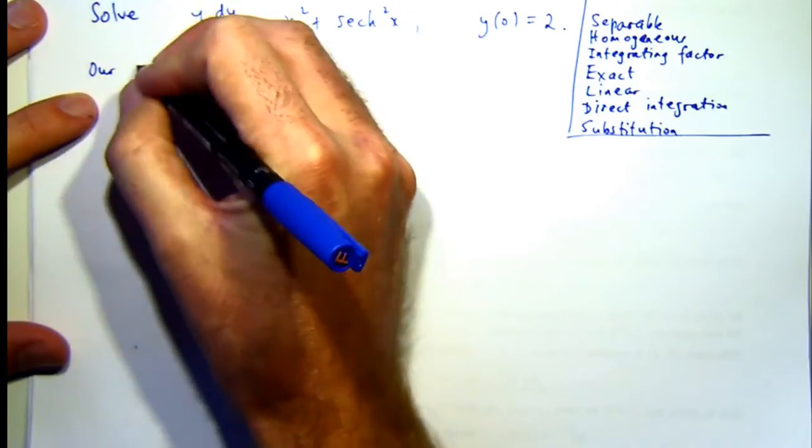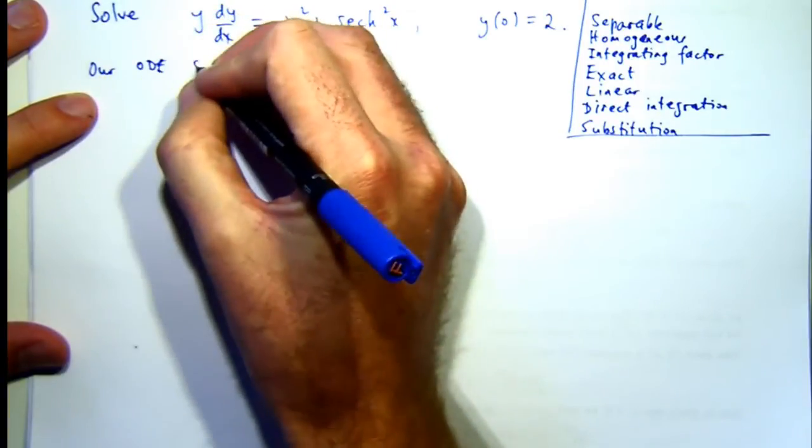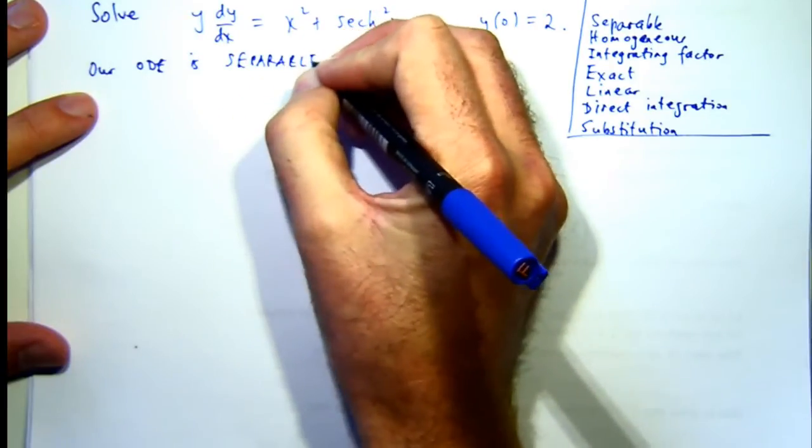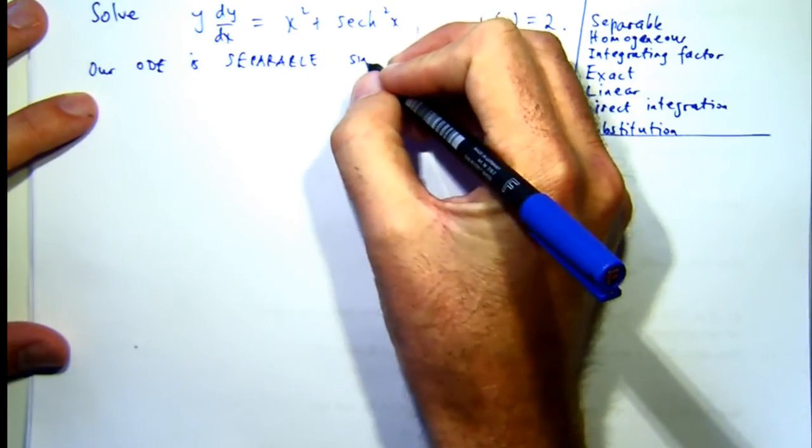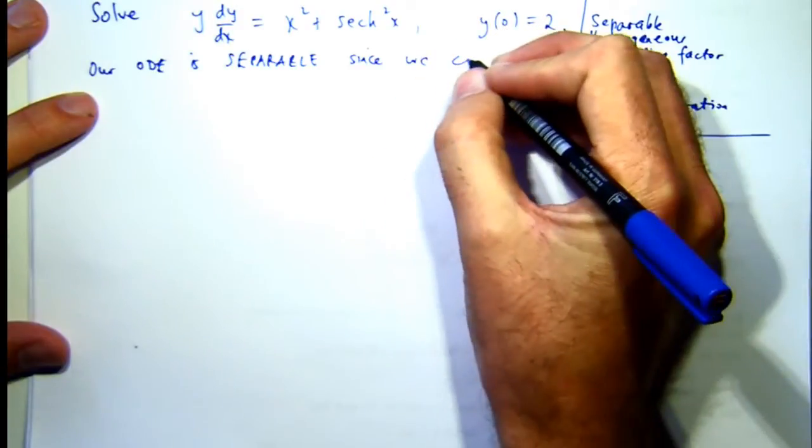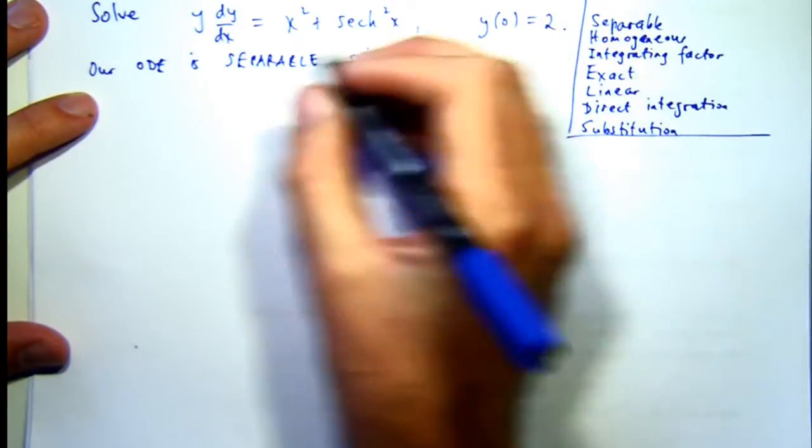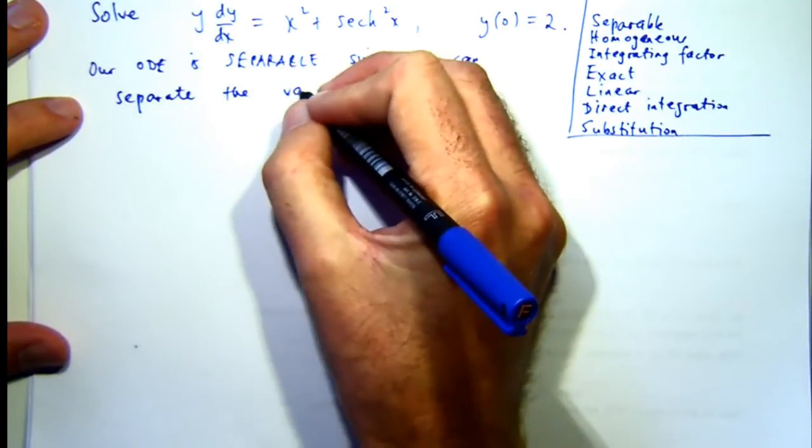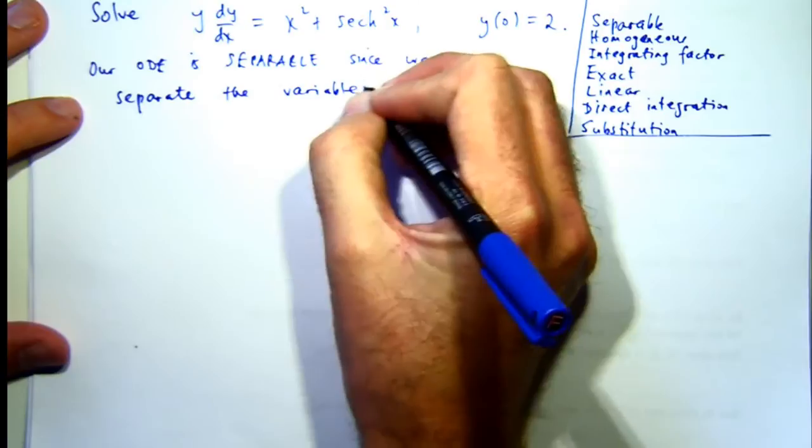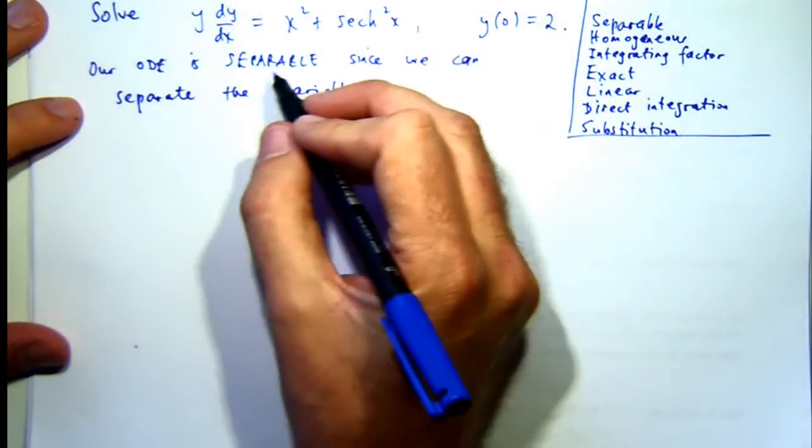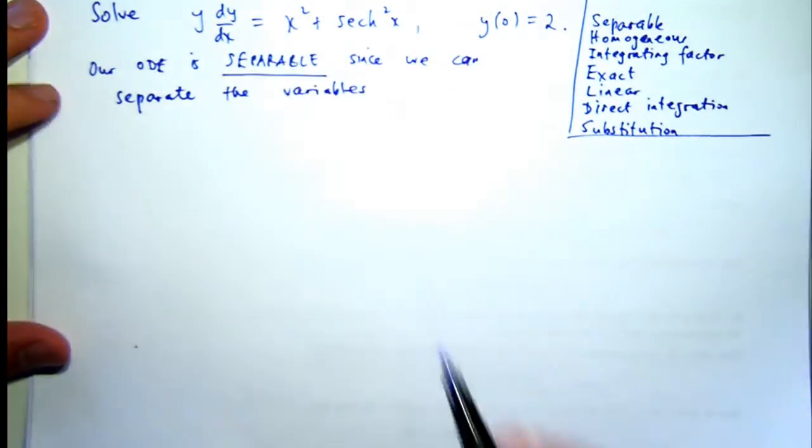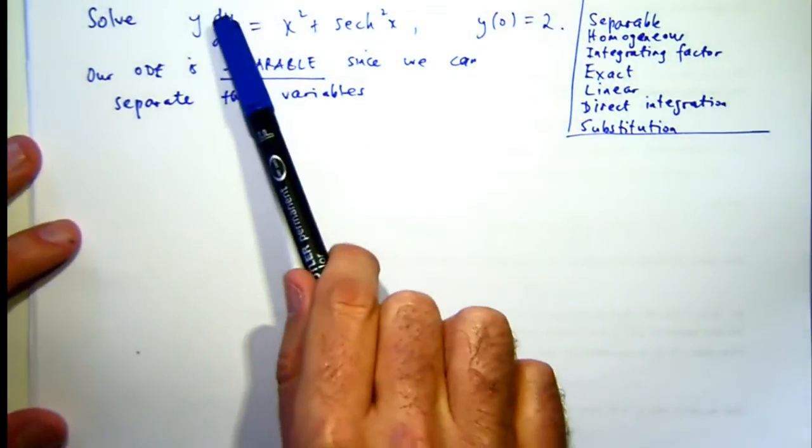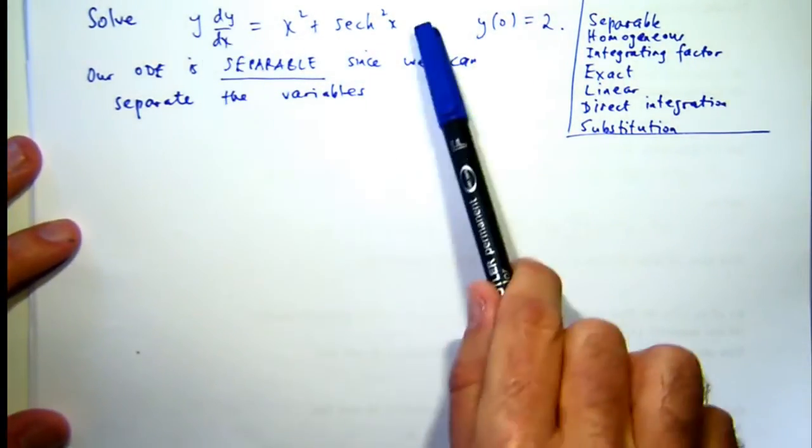So our ODE is separable since we can separate the variables. Now, by separating the variables, I mean you separate via multiplication or division. So here, I can bring this differential dx up to the left-hand side.